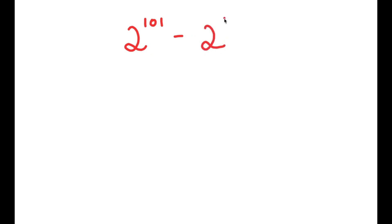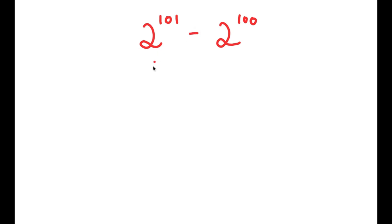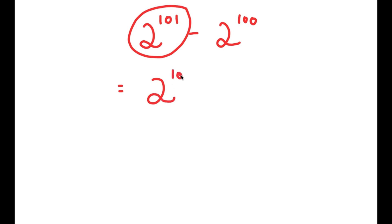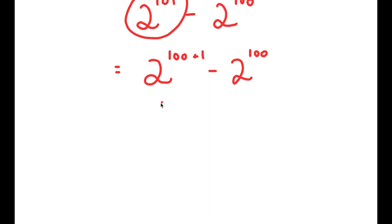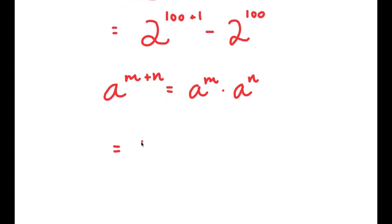In this video, I'm going to be solving the problem 2 to the power of 101 minus 2 to the power of 100. To solve this problem, I'm going to first start by rewriting 2 to the power of 101 as 2 to the power of 100 plus 1. The reason I did that is because now I can use the property that states a to the power of m plus n is equal to a to the power of m times a to the power of n. So 2 to the power of 100 plus 1 equals 2 to the power of 100 times 2 to the power of 1.